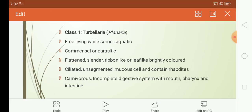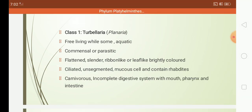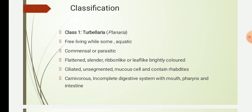Turbellarians have ciliated, unsegmented bodies. The epidermis, which is the body covering, is ciliated. The body is unsegmented, and they contain mucus cells which secrete a mucus trail that is used by the cilia to glide on.